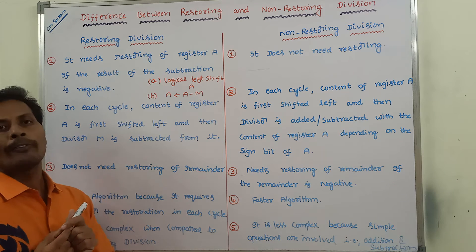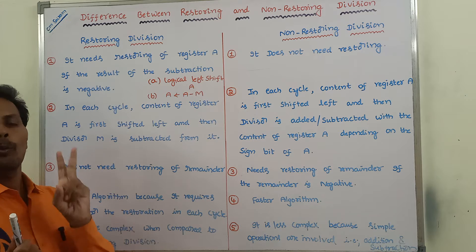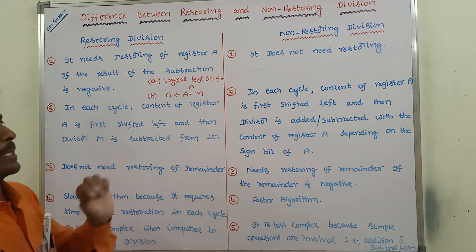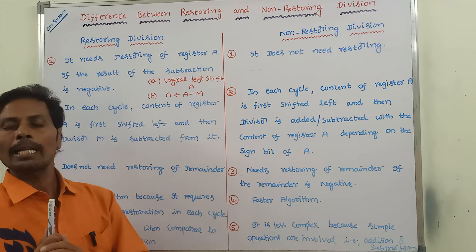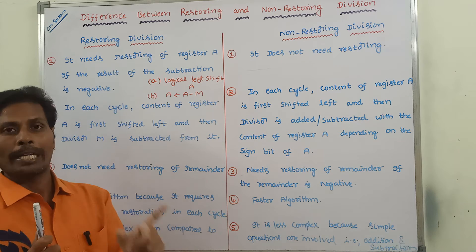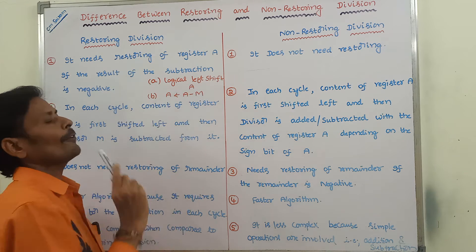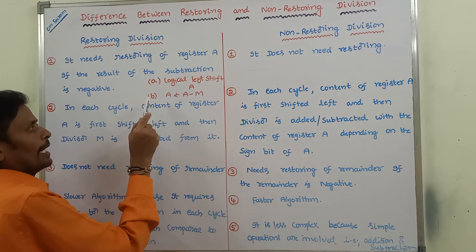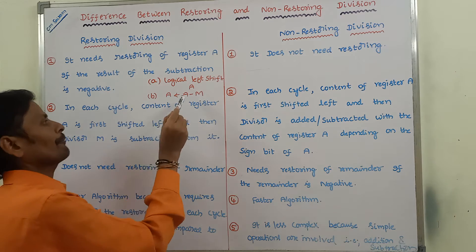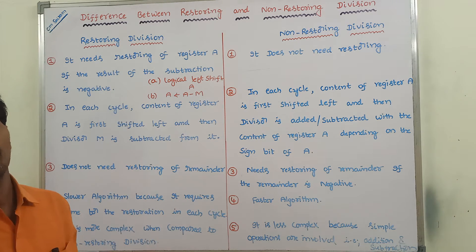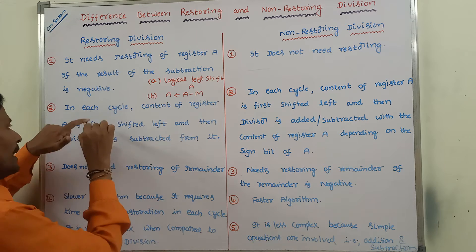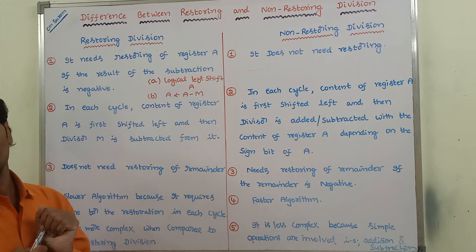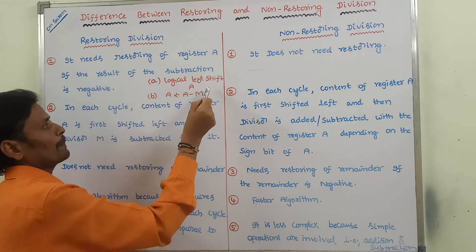In each cycle of restoring division algorithm, we have to perform two steps. First step is perform the logical left shift operation by one bit position on the content of register A. Second step is perform the subtraction operation between the content of register A and register M. The result is stored in register A. These two steps must be performed in each cycle of the restoring division algorithm.